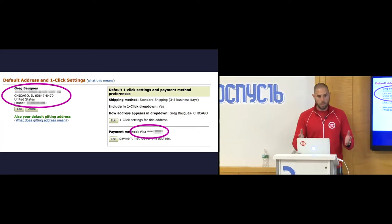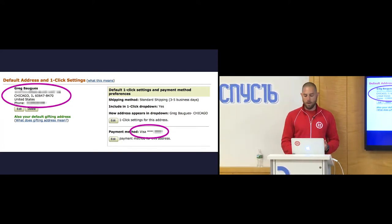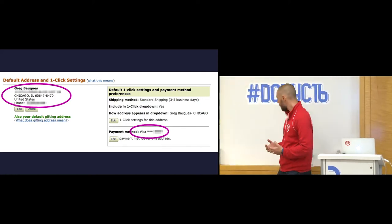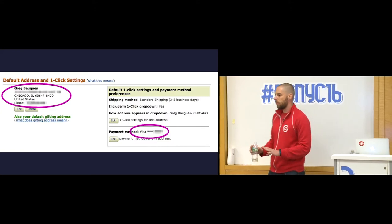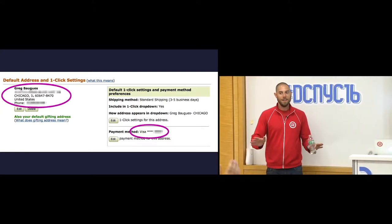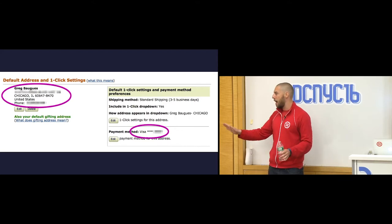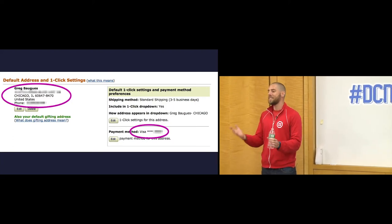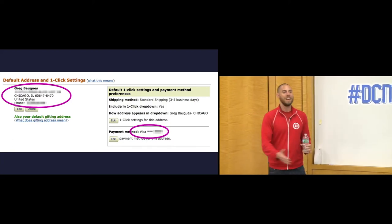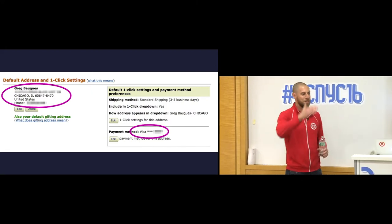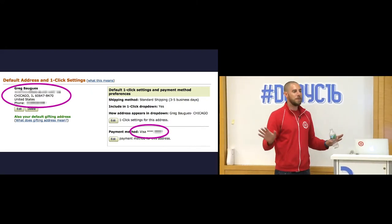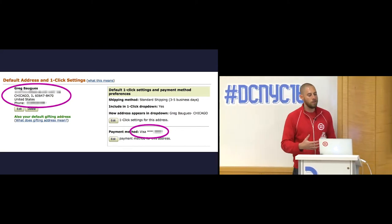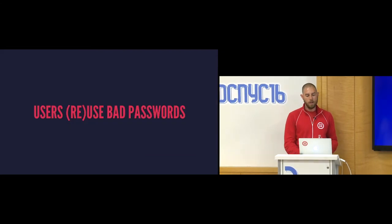He goes on in the article to say all of this could have been avoided if only he had enabled two-factor authentication on his Gmail account. Out of curiosity, how many of you have two-factor authentication enabled on your Gmail account? For those of you who didn't raise your hand — if you get nothing else out of this talk, please turn that on. And then please add it to your Twitter account, your Facebook account, and just start through the list. That's the most important thing you could pull from this talk.